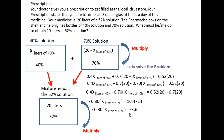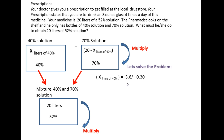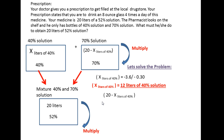Both sides are negative, so when we divide through by negative 0.3, the negatives cancel. Therefore x equals 12 — that's 12 liters of 40 percent solution. For the 70 percent solution, we use our expression (20 minus x): 20 minus 12 equals 8. So that's 8 liters of 70 percent solution.